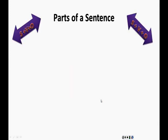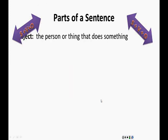First, we have the subject. The subject is the person or thing that does something in the sentence. It is near the beginning of the sentence and is a noun. In the example, she likes cats, she is the subject.